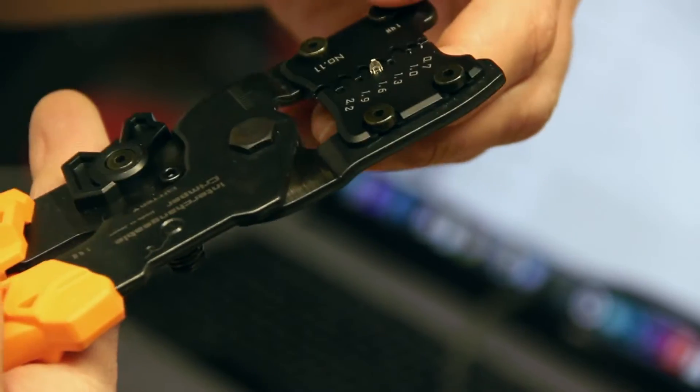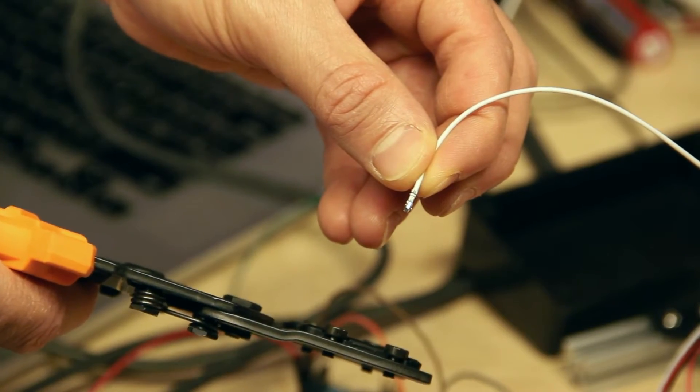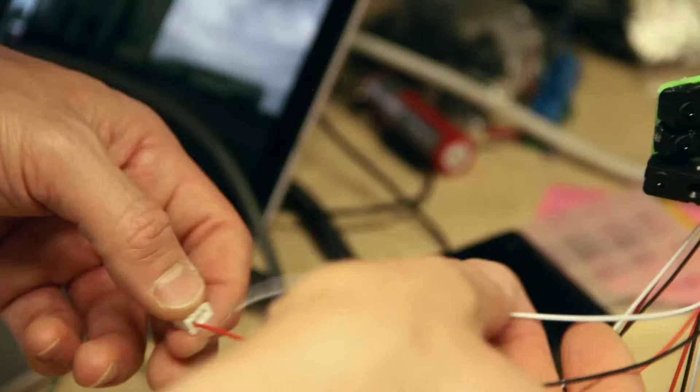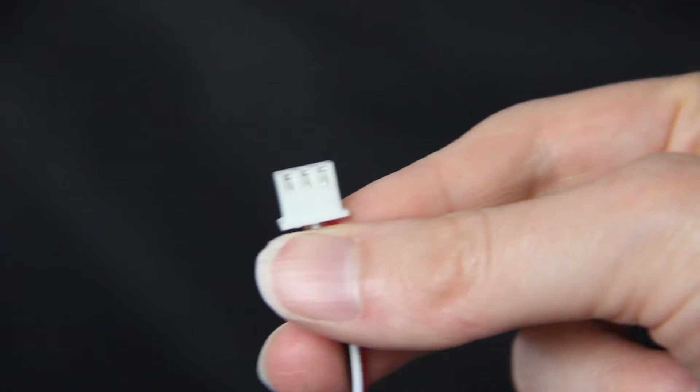Care should be taken when crimping to ensure a good electrical connection. You can pull on a crimp slightly to make sure that it's snug before you insert it into the connector housing, and a small pull can also be given once it's in the housing to make sure it's locked.